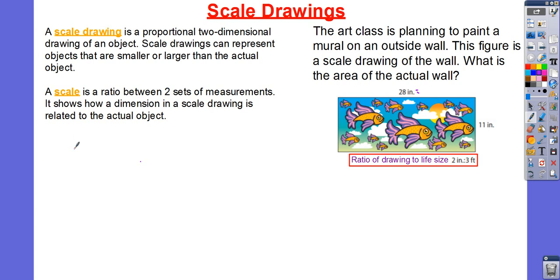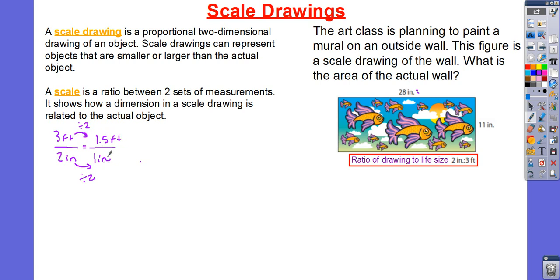Let's start with our scale. Our scale is two inches for every three feet. I'm going to go ahead and turn that into a unit rate. I need to figure out how much is for one inch, so I'm going to divide by two. Three divided by two is going to give me 1.5 feet. So, my scale now is for every one inch, it equals 1.5 feet.